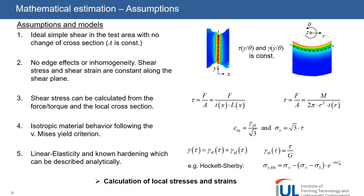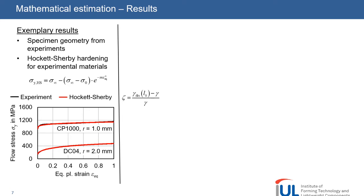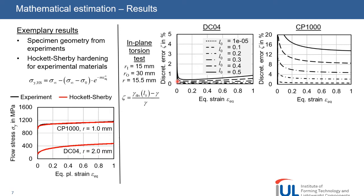I will show you some exemplary results using the specimen shapes and materials from the experiments before. You see the approximation of the flow curves according to Hockett-Sherby in red. These diagrams show the discretization error over the equivalent strain for different strain gauge lengths L0. Analog to the experiment, the in-plane torsion test is analytically evaluated at a radius of 15.5 mm. As you see for the in-plane torsion test, positive errors are calculated, meaning that the measured discrete strain is higher than the correct local strain, as we also saw in the experiments.